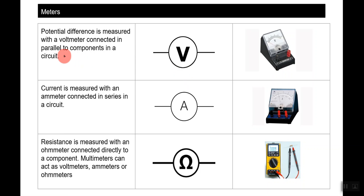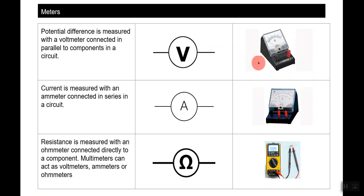Voltage — sometimes called potential difference — is measured with a voltmeter connected in parallel to the components in the circuit. This is what a voltmeter looks like. It's connected in parallel to the circuit and you get a reading in volts.